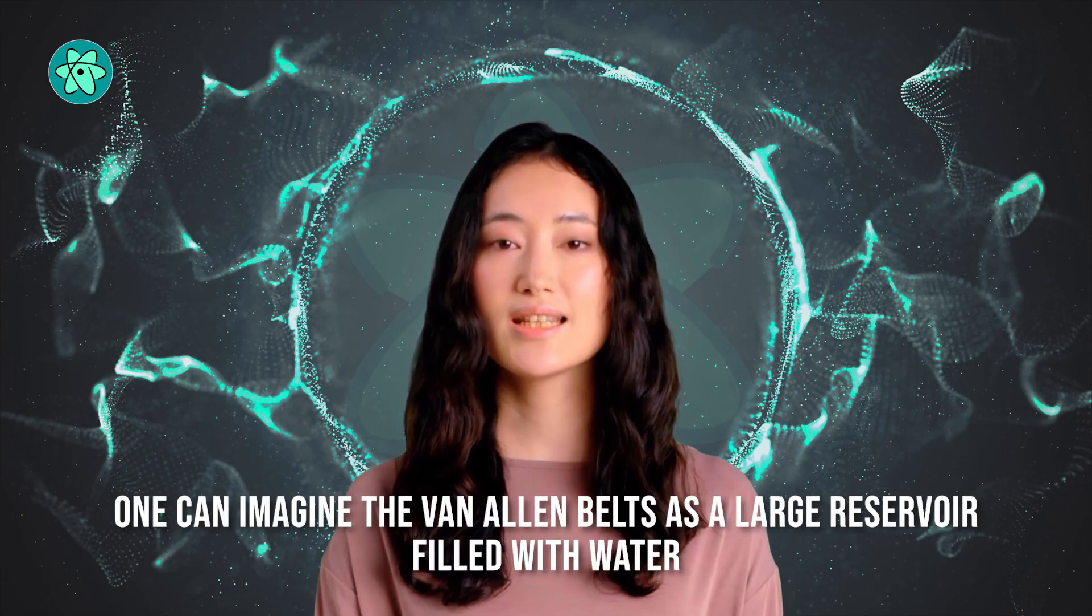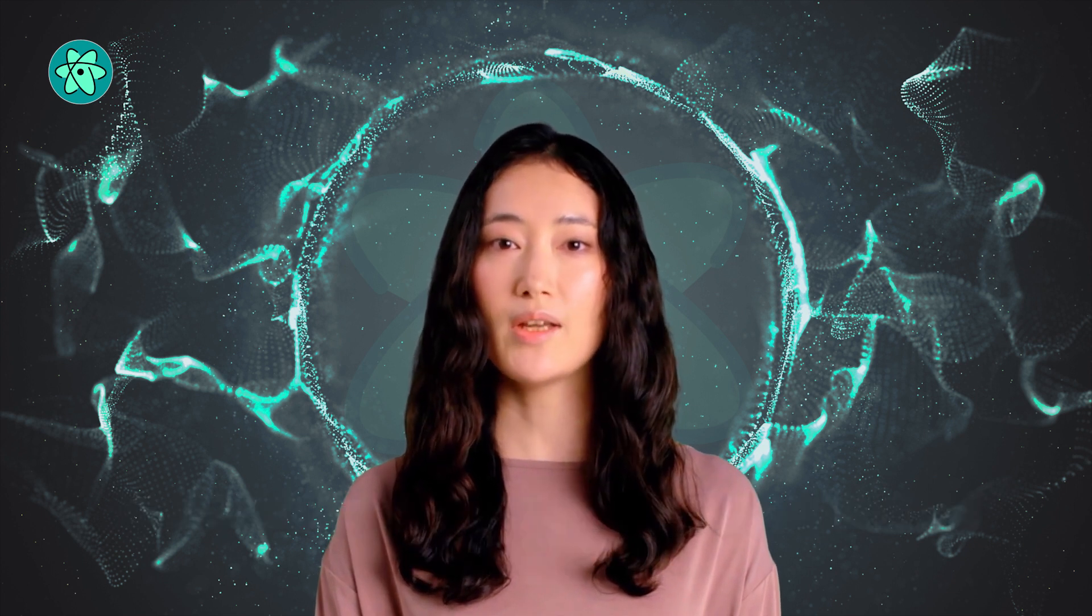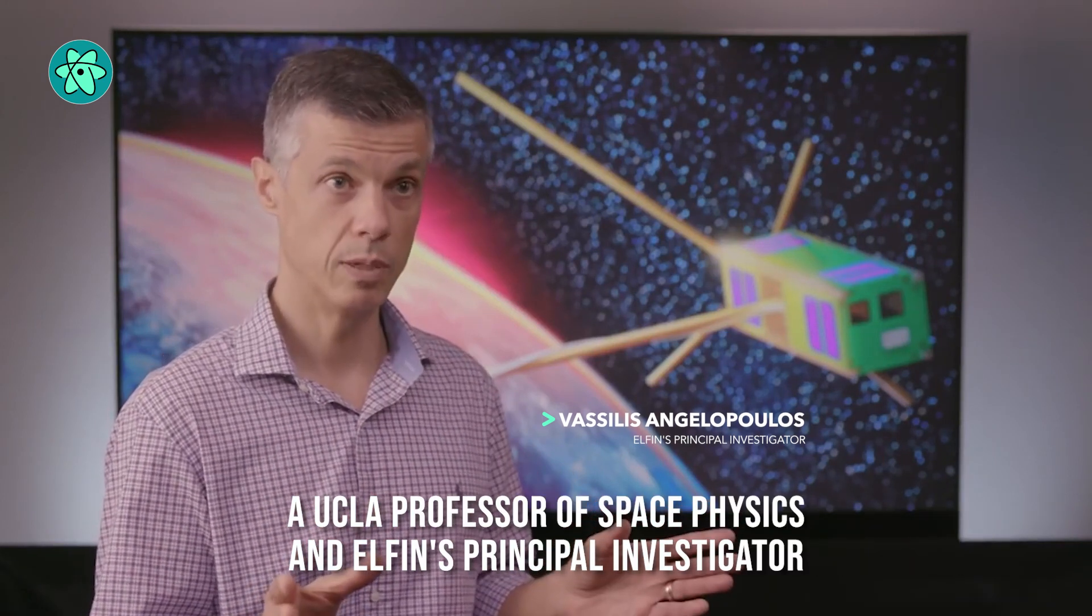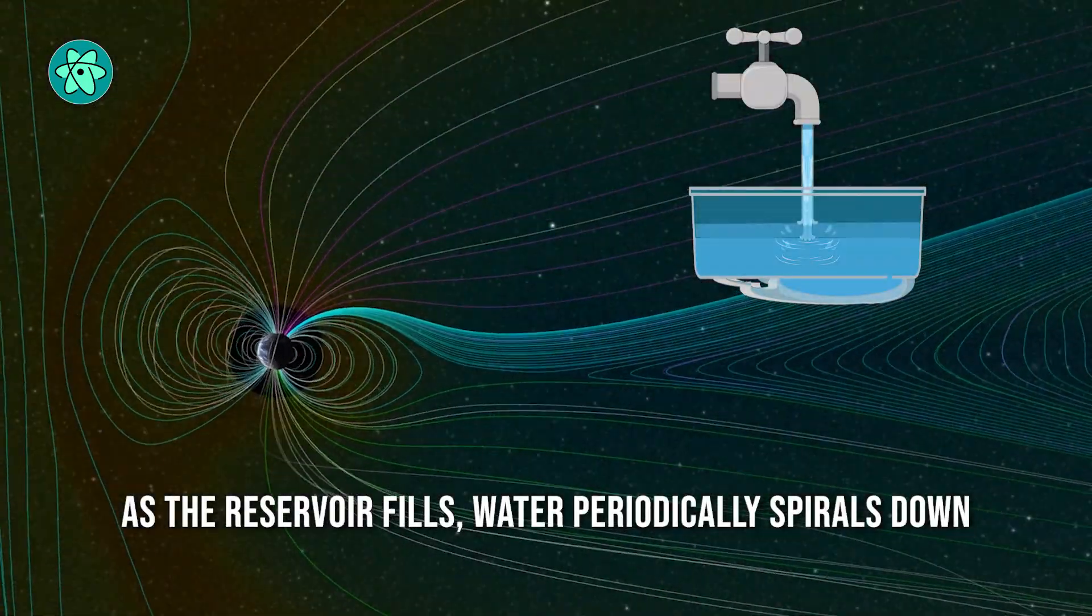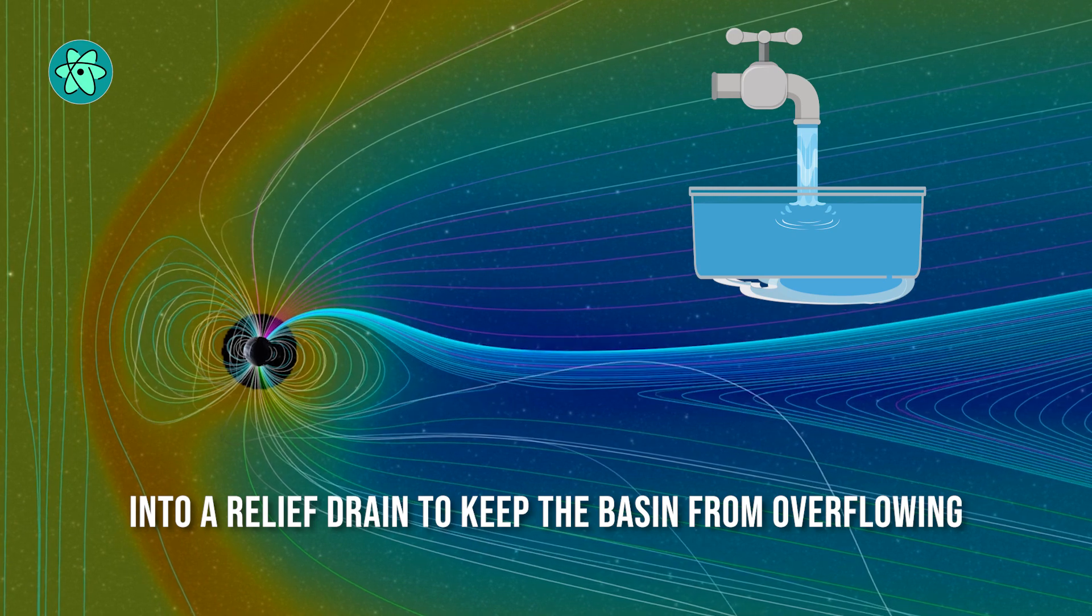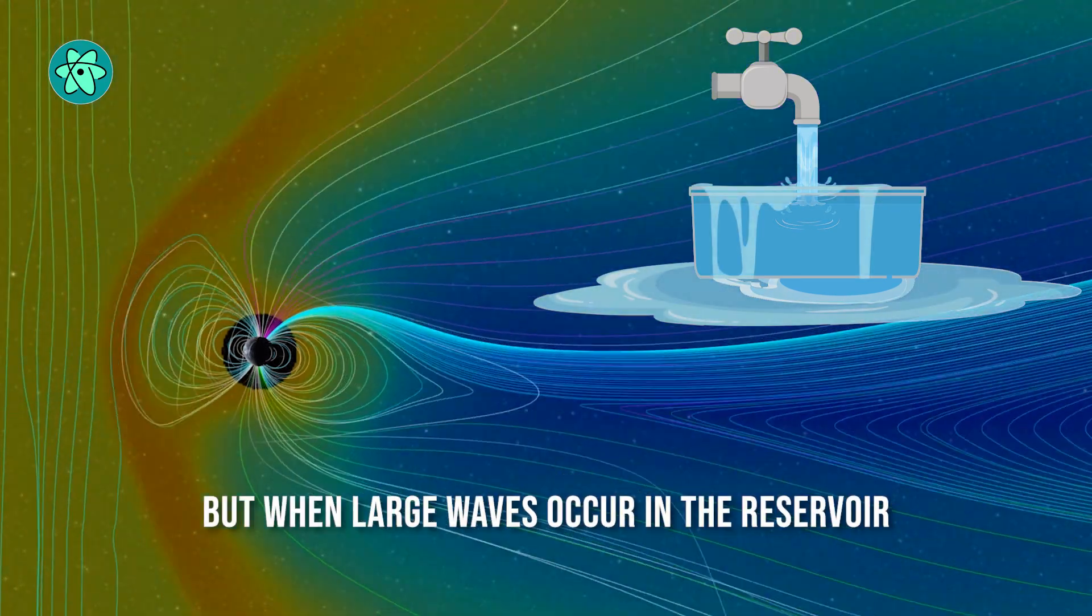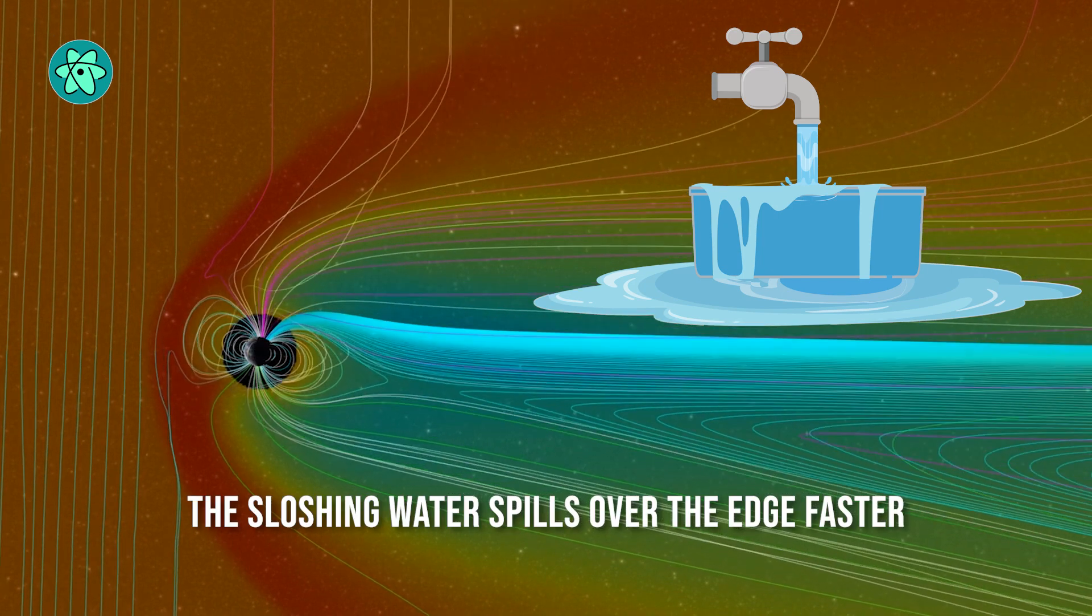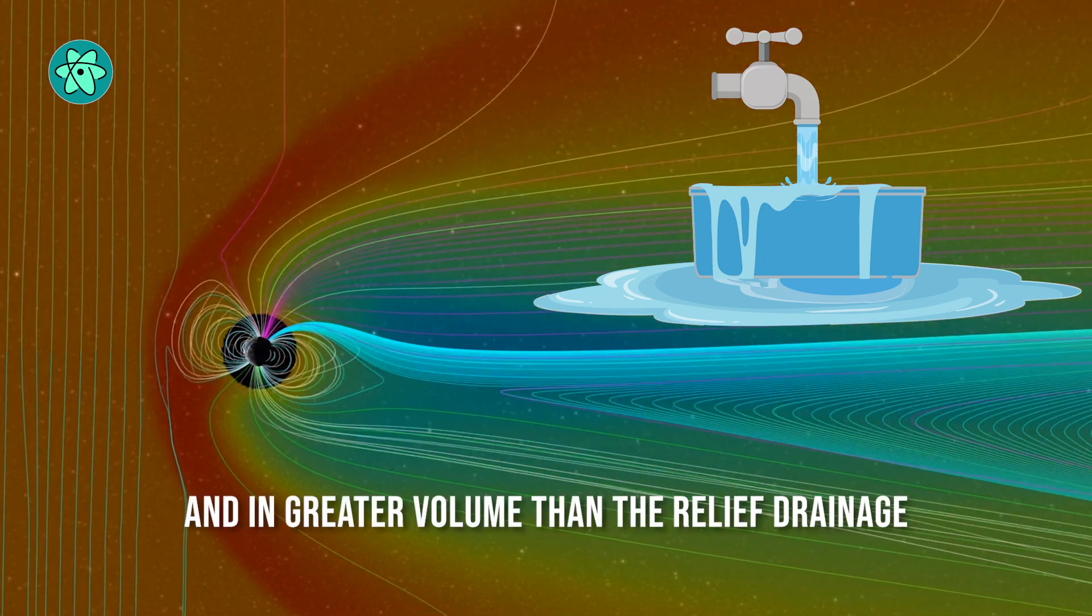One can imagine the Van Allen belts as a large reservoir filled with water, or in this case, electrons, said Vassilis Angelopoulos, a UCLA professor of space physics and ELFIN's principal investigator. As the reservoir fills, water periodically spirals down into a relief drain to keep the basin from overflowing. But when large waves occur in the reservoir, the sloshing water spills faster over the edge and in greater volume than the relief drainage.